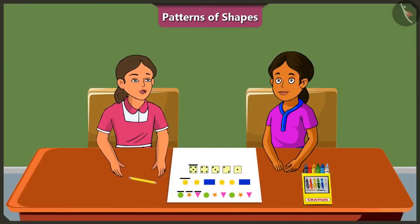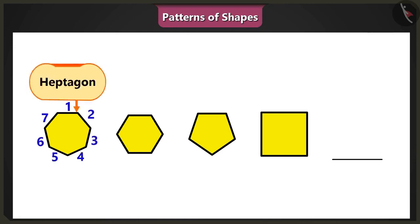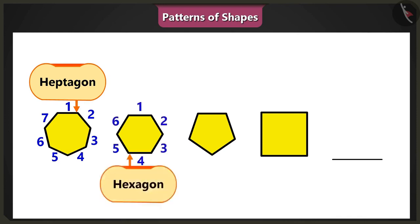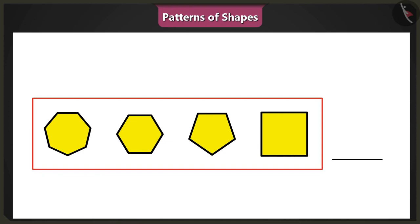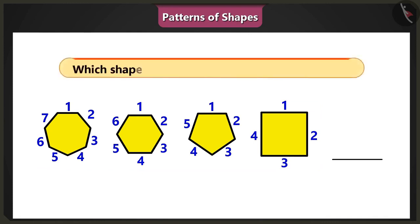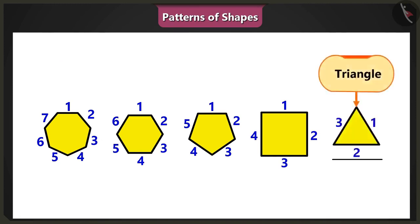But the pattern may not always be in ascending order. For example, here is a pattern of shapes: a seven-sided shape — heptagon — is followed by a six-sided shape — hexagon — then a five-sided shape — pentagon — and then a four-sided shape — square. In this pattern, the sides of all shapes are in descending order. So now tell me, which shape will come next? In this pattern, the next shape will be the three-sided shape — triangle.